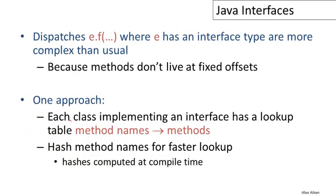So how can we then implement interfaces? Well, it's going to be a little more complex than usual to implement a dispatch, say to a method F where e has some interface type. So if e has a type of some interface and now we're calling the F method of that interface, then we're gonna have to do a little bit more work. And so here's one approach. This approach is actually quite inefficient, but you can see that it will work.